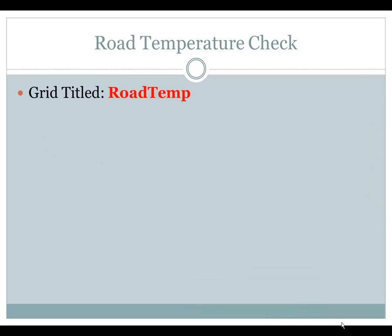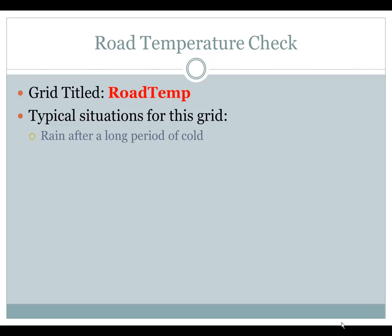The last grid — and this is only needed when road temperatures are playing a role — is a grid called road temp. Typical situations for this grid include rain falling after a long period of cold where the roads are now well below freezing, temperatures are warming up to maybe 35 or 36°F, you are getting rain, but those roads still cannot warm up yet.